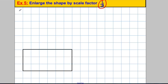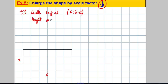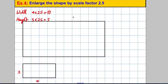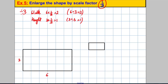Example 5: enlarge the shape by scale factor one third. A scale factor of one third means the sides are divided by 3 (or multiplied by one third). This shape has width 6 and height 3. The new width is 6 × ⅓ = 2, and the new height is 3 × ⅓ = 1. So the new shape is 2 across and 1 high. This is a reduction rather than a true enlargement — it's shrinkage.